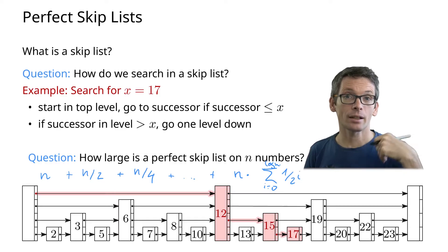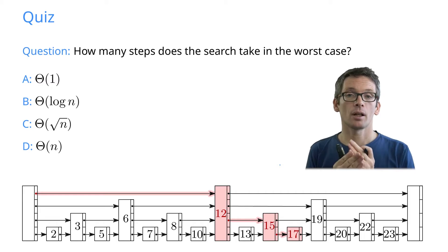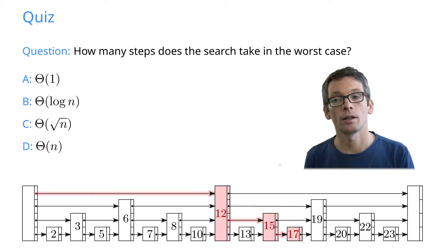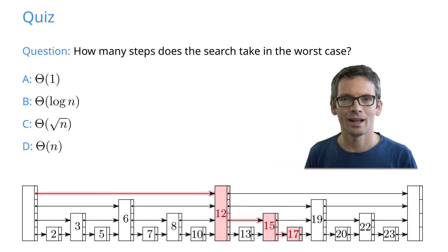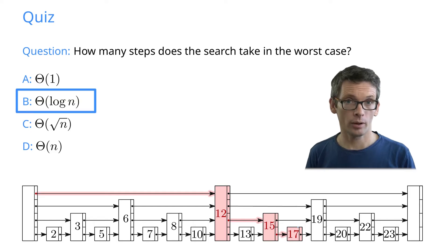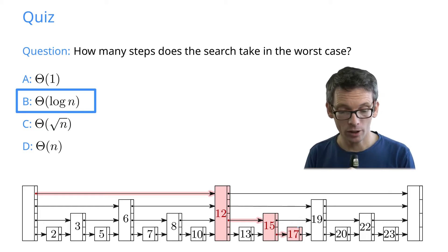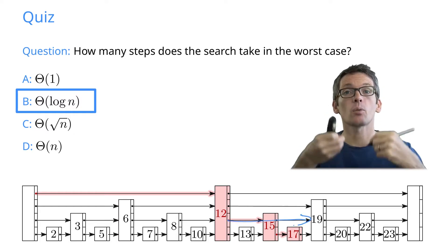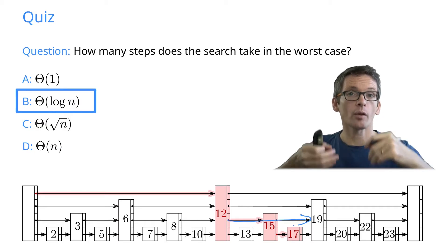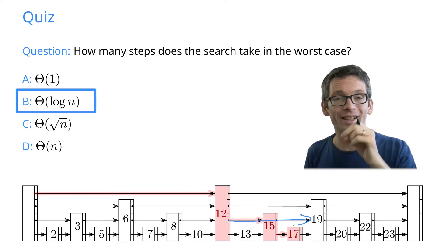Let's look at the time to search for an element — that's our first quiz. How many steps does the search take in the worst case: constant, log n, square root of n, or linear? The correct answer is O(log n). Why? Because we have log n levels and per level we actually do at most one step. If we would be doing two steps in a certain level, we could have done this as one step one level higher. On the highest level there's only one step we can do at all, so in any level we do at most one step.